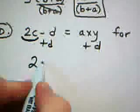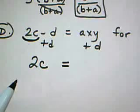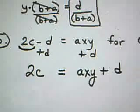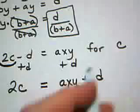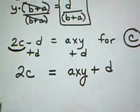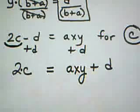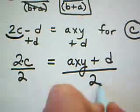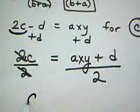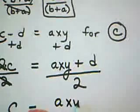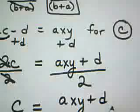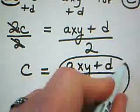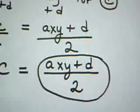That would leave me with 2C on the left, my equal sign. On the right-hand side, I would have the term AXY plus D. Remember, we're trying to solve for C. In order to accomplish that, we need to undo this multiplication with division. Both sides of the equation get divided by 2. My answer, C is equal to AXY plus D all divided by 2. And I'm done. All right, thanks.